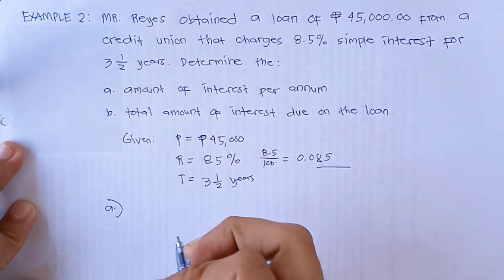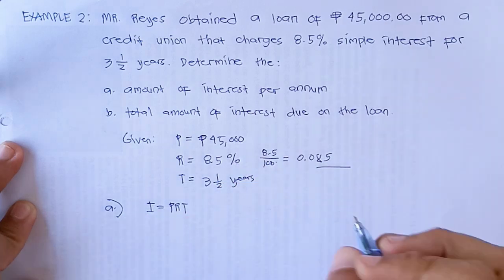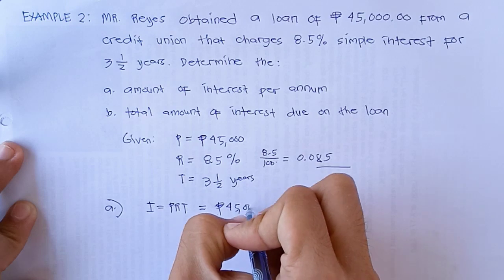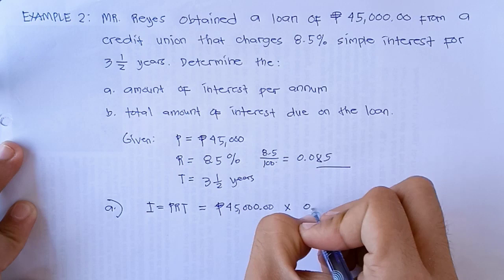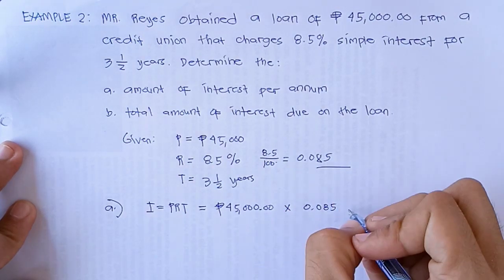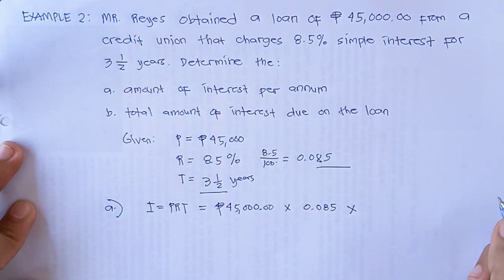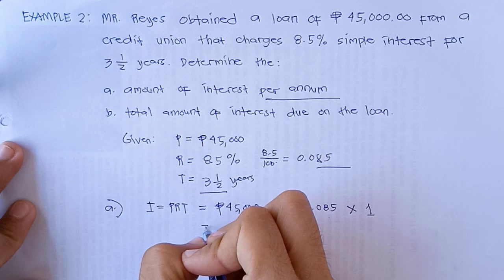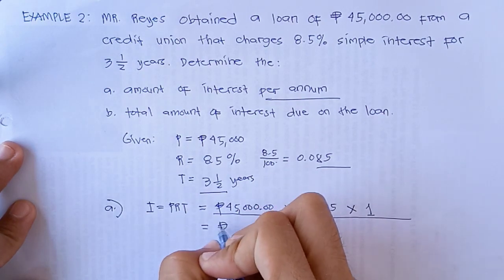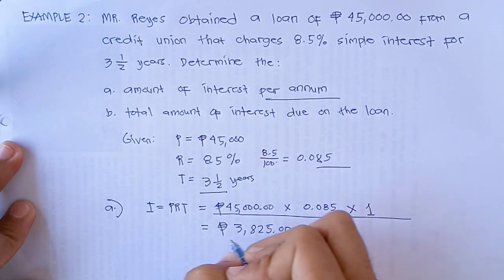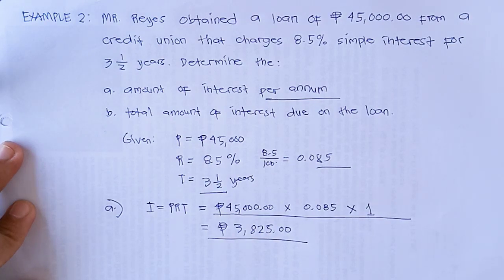So we have I = P × R × T. Substitute. This is equal to 45,000 pesos times 0.085, the rate, times... what time should we use? Yes, you're right. The question for letter A is the amount of interest per annum. When we say annum, yearly. So we need to use 1 as our time. By simply multiplying the three, we will get 3,825 pesos. That's the amount of interest per year or yearly.